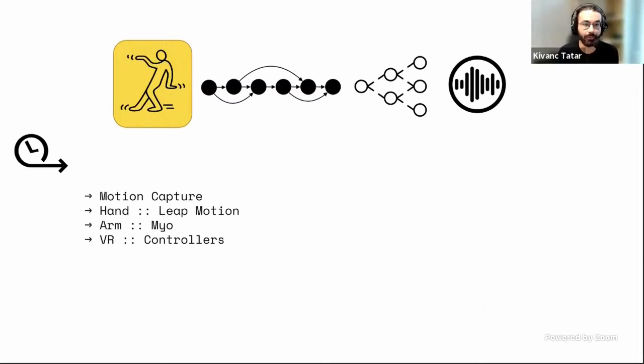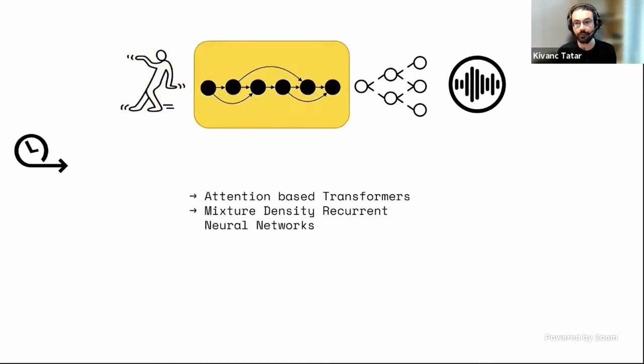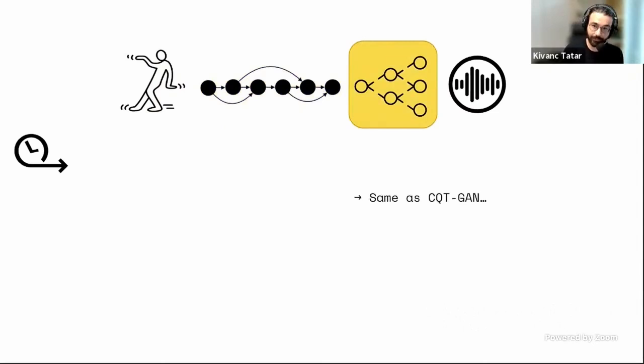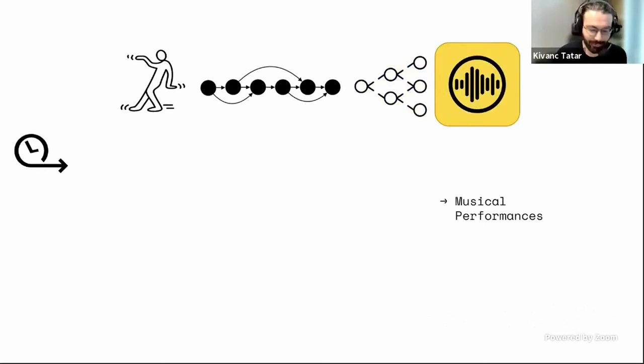There is quite a bit of future research on this: trying different input modalities as opposed to motion capture, trying different models other than a simple sequence-to-sequence model, changing the Variational Autoencoder sound synthesis parts to make it higher quality, and making musical performances — we haven't done that yet with this approach.